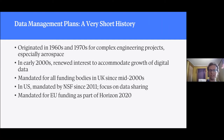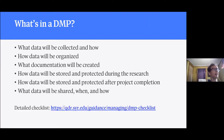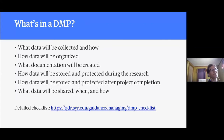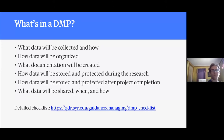So what actually is a DMP and what's in it? You'll find a lot of lists, and this is an abbreviated version — we have a checklist at QDR with around 30 points. First, you want to say what data will be collected: are you collecting interviews, archival documents, both, survey research? You want to specify how much and in what formats. Then, how are you going to organize that data?